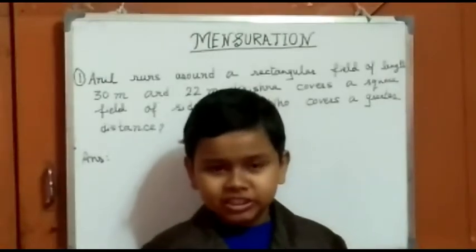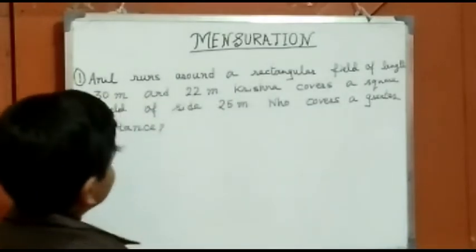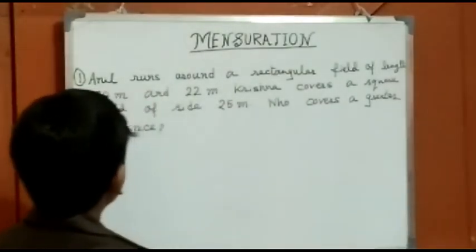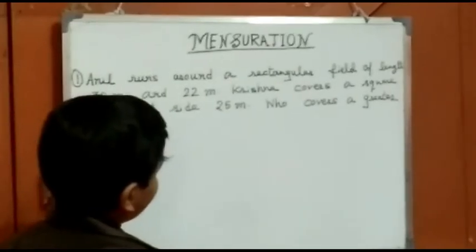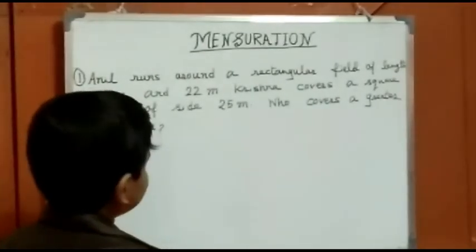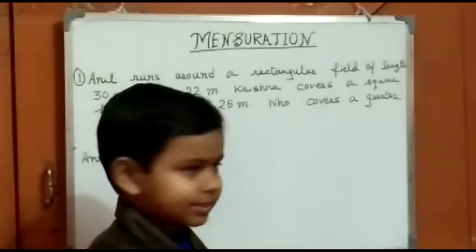Now some questions. So the first question is: Anil runs around a rectangular field of length 30 m and breadth 22 m, whereas Krishna covers a square field of side 25 m. Who covers a greater distance?